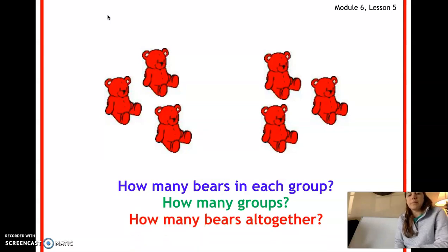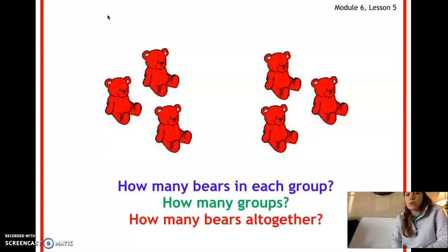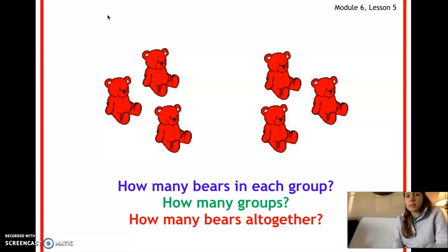Now how many bears are there all together? You can count: one, two, three, four, five, six. Or you can do your repeated addition sentence. In this case you would only need to do a regular addition sentence, so it would be three plus three equals six.